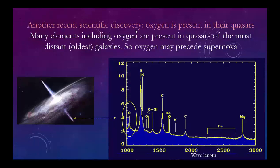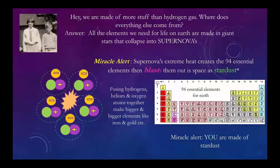A relatively recent scientific discovery is the presence of oxygen when looking at the contents of stars. In the pulsars there is oxygen, so when it makes elements it's going to use hydrogen, helium, and oxygen fusing together to make the 94 essential elements. All of the essential elements we need for life on Earth are made in the giant stars as they collapse into supernovas. The supernova's extreme heat makes the 94 essential elements and then blasts them out into space as stardust.